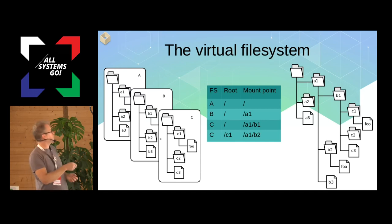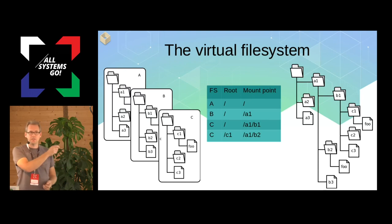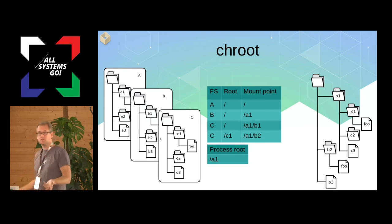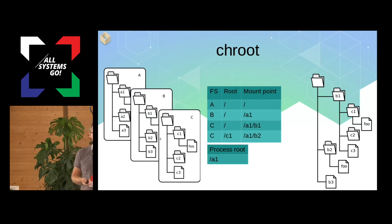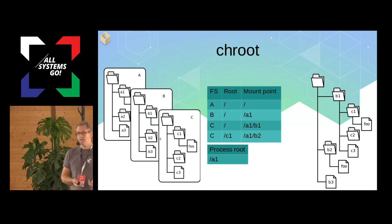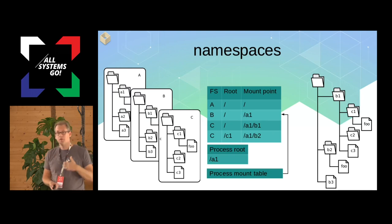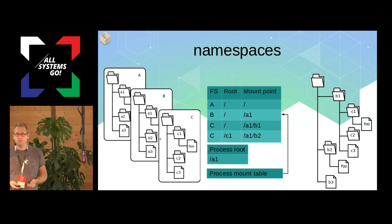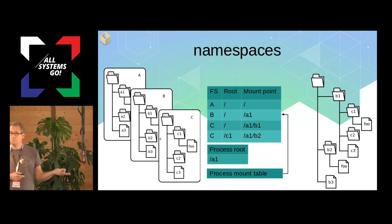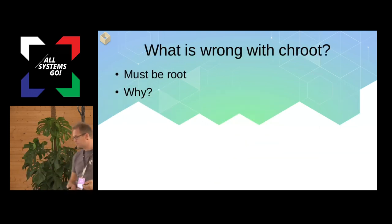At some point someone added the chroot concept because it would be cool to virtualize what apps see. Instead of the root directory being a global thing, it became per-process — a global variable made into a member of the process struct. This way apps can see different things in the file system. Later, namespaces were added, which make the entire mount table different per process, so mounts can be completely different in each namespace. Physical filesystems might be visible in some namespaces but completely invisible in others.